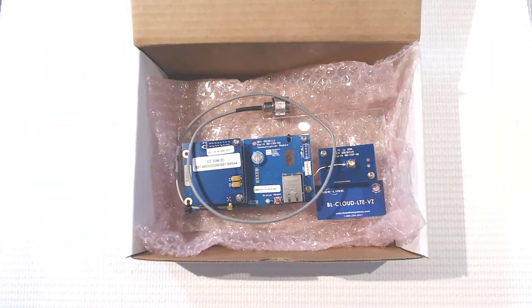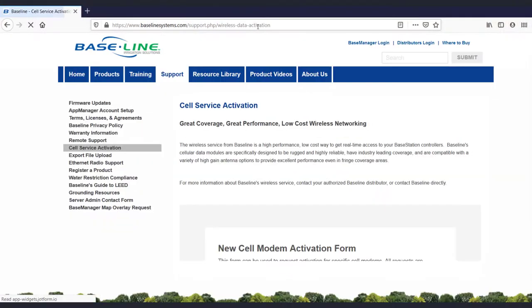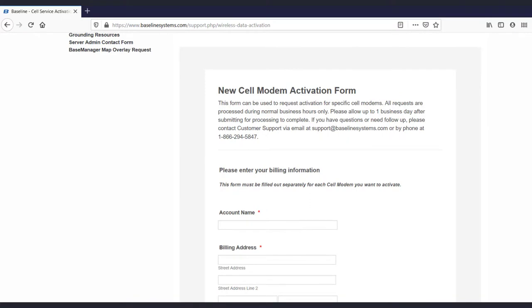Before we install the module, we need to activate it. For that, we'll need the information on the card and then visit baselinesystems.com/wirelessactivation.